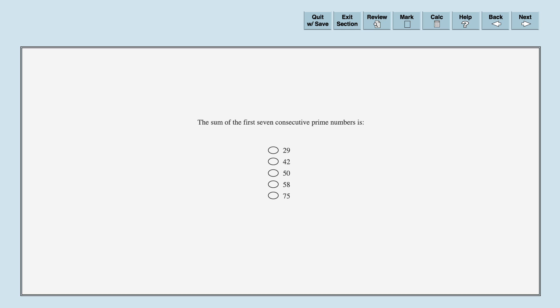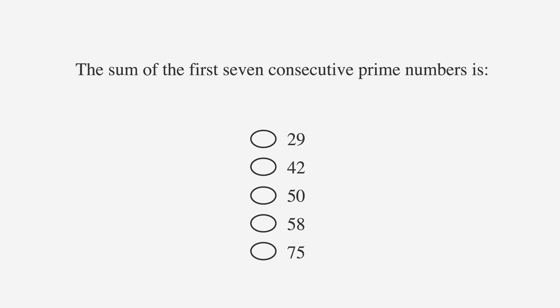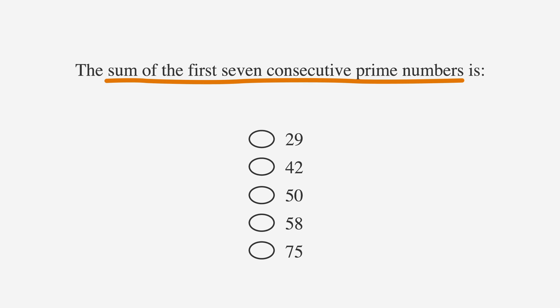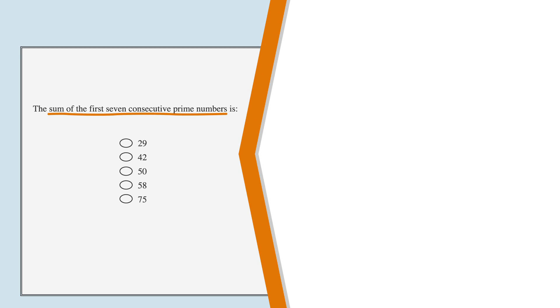Check out this multiple choice GRE style question. The sum of the first 7 consecutive prime numbers is 29, 42, 50, 58, or 75. Clearly we need to find the first 7 prime numbers. Let's bust out our scratch paper and work it out. Remember 0 and 1 are not prime, but 2 is. So our list consists of 2, 3, 5, 7, 11, 13, and 17. Adding them together, we find that the sum is 58. The fourth answer choice is correct.